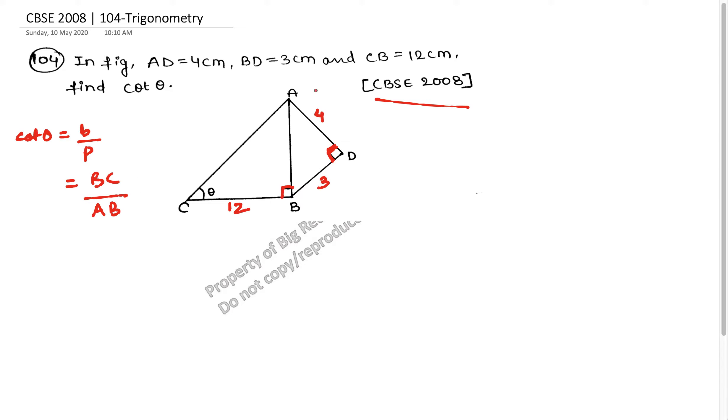Now BC is given as 12 cm, so my BC is equal to 12 cm. And AB is what I do not know and AB is what I have to find.